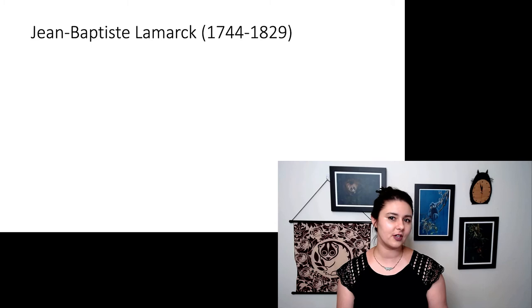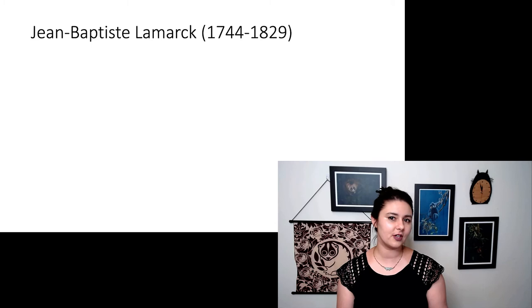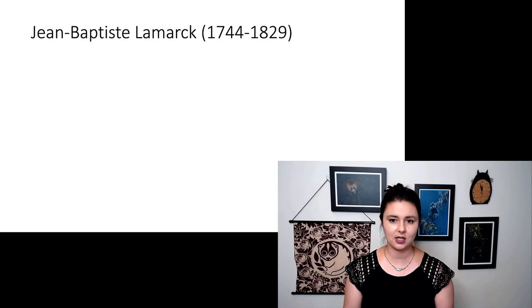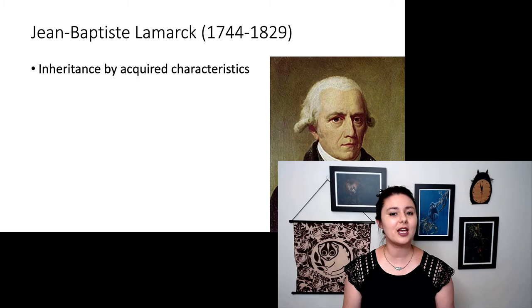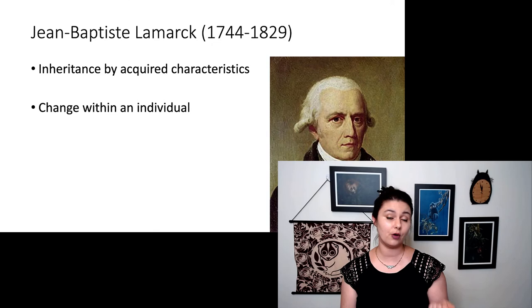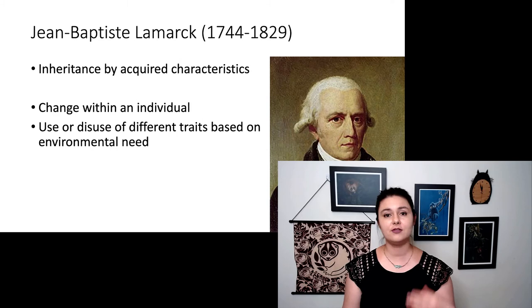The next important figure was Jean-Baptiste Lamarck. He lived in the late 1700s and early 1800s. He is the first person to come up with a hypothesis to explain the mechanism for change. His theory was inheritance by acquired characteristics. His theory was that an individual changed over its lifetime. It changed based on the use or lack of use of different features. And it would change by environmental need.